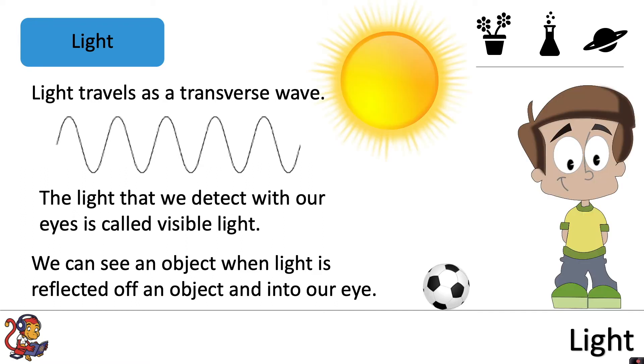For example, to see the football, light from the Sun travels to the ball, is reflected off the ball, and into our eye.